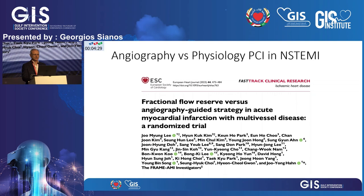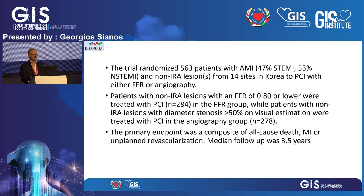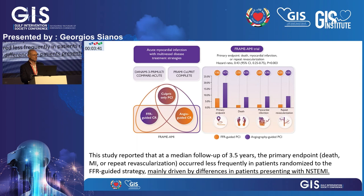Another study — a Korean trial — assessed physiology-guided treatment specifically in NSTEMI, which sits between stable coronary artery disease and STEMI in terms of acuity. This trial randomized 563 patients, 53% of whom had NSTEMI, across 14 sites in Korea, comparing FFR-guided versus angiography-guided strategy. Non-culprit lesions with FFR of 0.80 or lower were treated in the FFR group, while lesions with diameter stenosis above 50% by visual estimation were treated in the angiographic group. Physiology-guided treatment again produced better results.